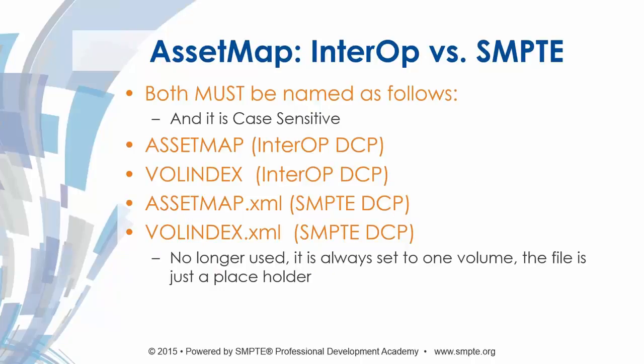The first change that's fairly simple to spot between an Interop and a SMPTE package is the asset map and volume index. Interop packages did not have a file extension — they were just labeled 'asset map' or 'volume index.' In a SMPTE package, they're required to have the .xml extension. Also worth noting: the volume index is no longer really used. It is always set to one volume, and this file is simply a placeholder so that systems don't break. Disk drives have gotten so big that we don't have a problem fitting all DCPs on one hard drive, so the volume index has outlived its usefulness.